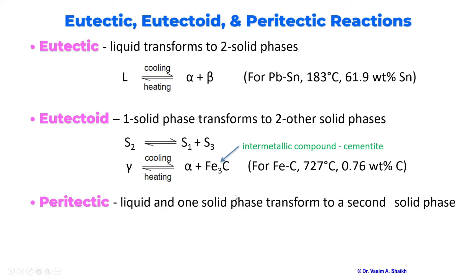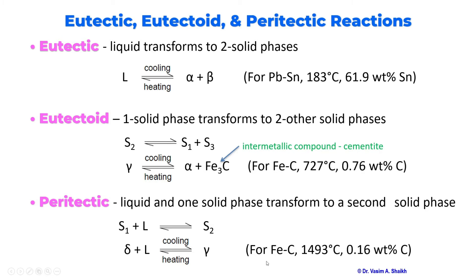Next we will look into the peritectic reaction, where one liquid and one solid will transform into a second solid phase. As an example from the iron-carbon phase diagram, at around 1493 degrees Celsius at a composition of 0.16 weight percent carbon, delta (a solid phase) and liquid will transform into gamma, which is the austenite phase. In the upcoming slide, we will look at a new phase diagram to study the peritectic reaction. Remember: solid plus liquid gives another solid — that is the peritectic reaction.